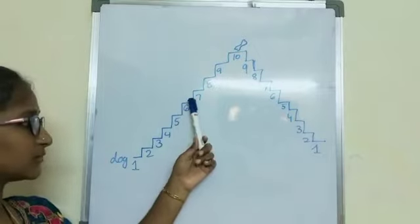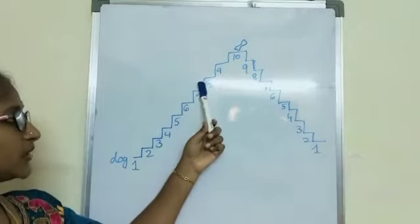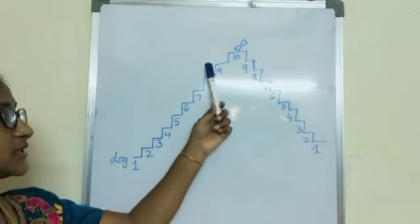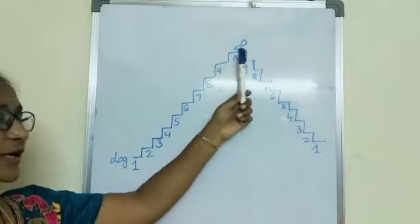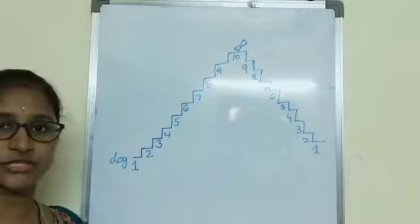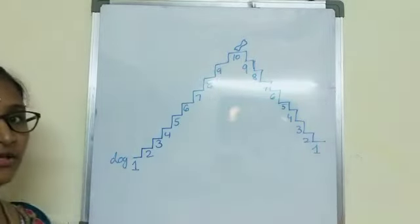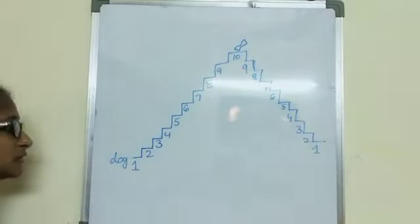It went to step 5, it went to step 6, it went to step 7, then 8, then 9. Finally it reached step 10 to take the boat. So, see children here.